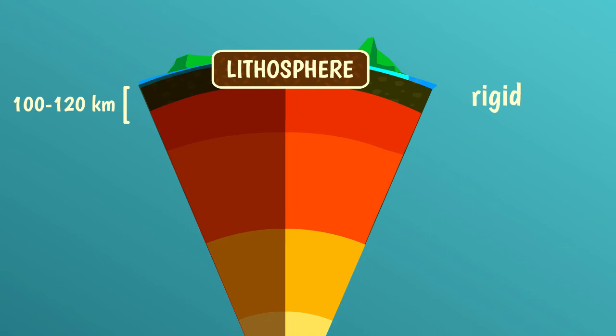The rocks in the lithosphere are not ductile and do not deform easily. When they do, instead of flowing, they break, forming faults. As we will see in a future video, this rigid layer, known as the lithosphere, is what forms the tectonic plates, which deform very little and only in specific places.